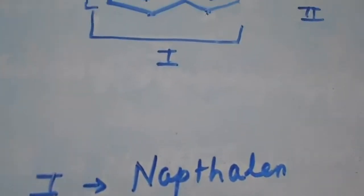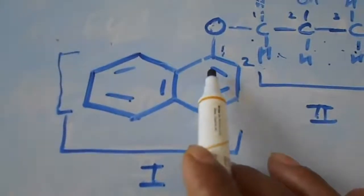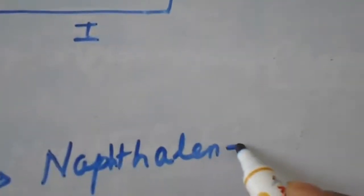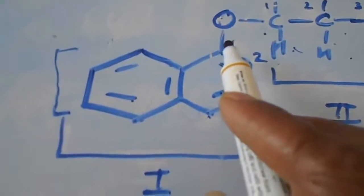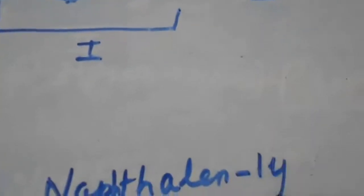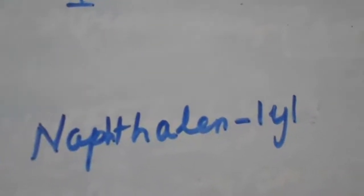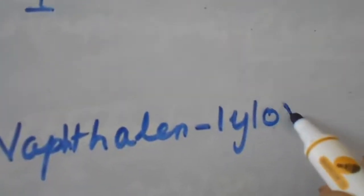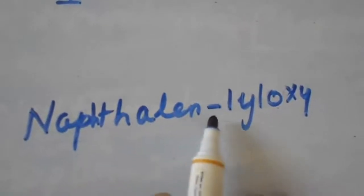Writing the first segment: starting with 'naphthalene', I must include the oxygen attached at the first position. One hydrogen of naphthalene has been replaced by this oxygen. Using the suffix '-yl' — as when removing one hydrogen from an alkane we use the word 'alkyl' — it becomes 'naphthalen-1-yl'. Since this position is attached with an oxygen, it becomes 'naphthalen-1-yloxy'.